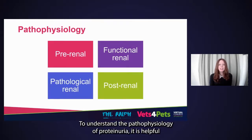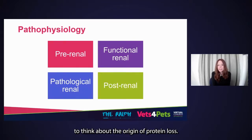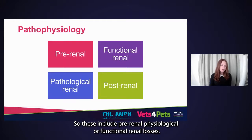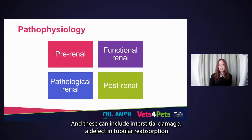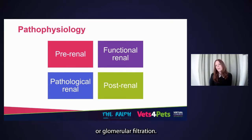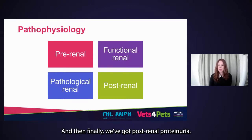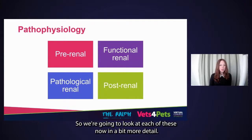To understand the pathophysiology of proteinuria, it is helpful to think about the origin of protein loss. These include pre-renal, physiological or functional renal losses, and pathological renal losses — which can include interstitial damage, a defect in tubular reabsorption, or glomerular filtration. And then finally, we have post-renal proteinuria. We are going to look at each of these in a bit more detail.